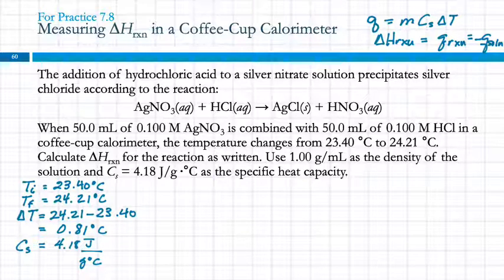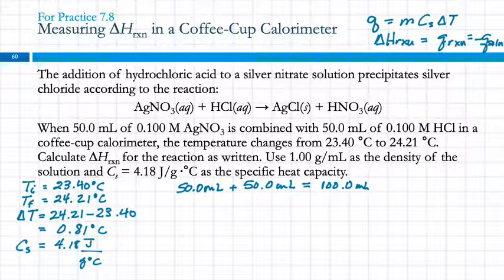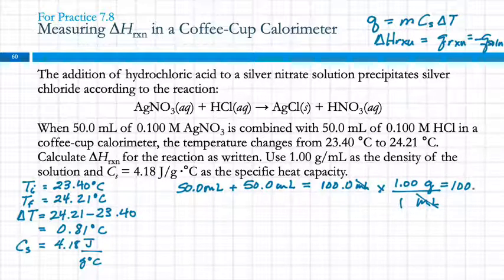So I need the mass. If they give me the density, do I know the total volume of the solution? What is it? It's 100 milliliters. So I have 50 milliliters of one and 50 milliliters of the other. So I've got 50 milliliters plus 50 milliliters. So that's 100.0 milliliters. And I need that as a mass. So I can use the density to convert. I want grams on top and milliliters on the bottom, so those cancel. And it's 1.00 grams per one milliliter. And we end up with 100 grams.